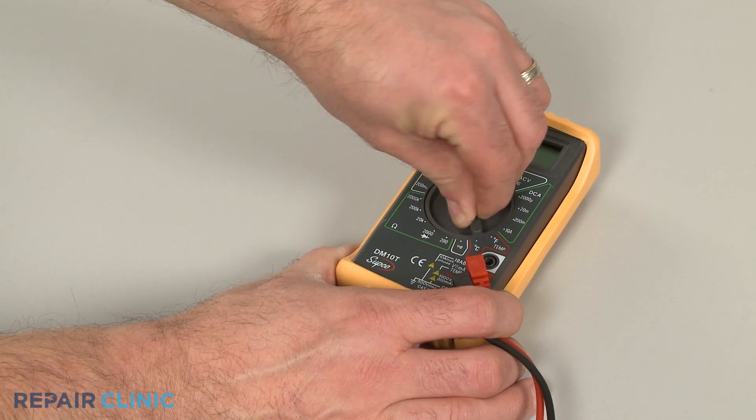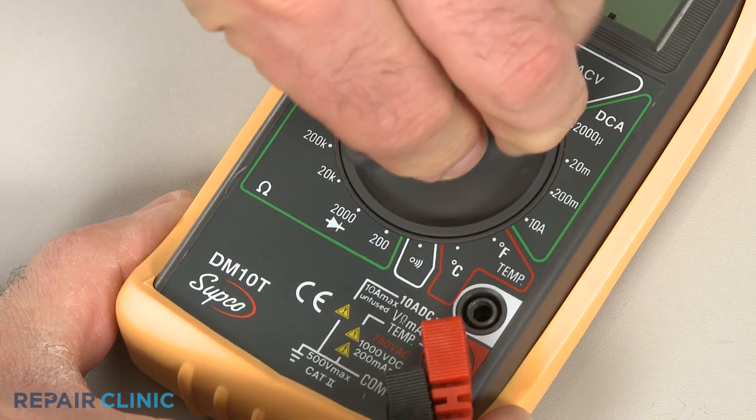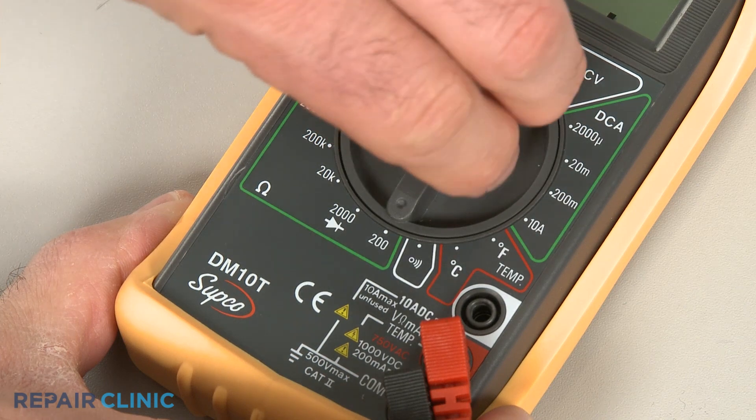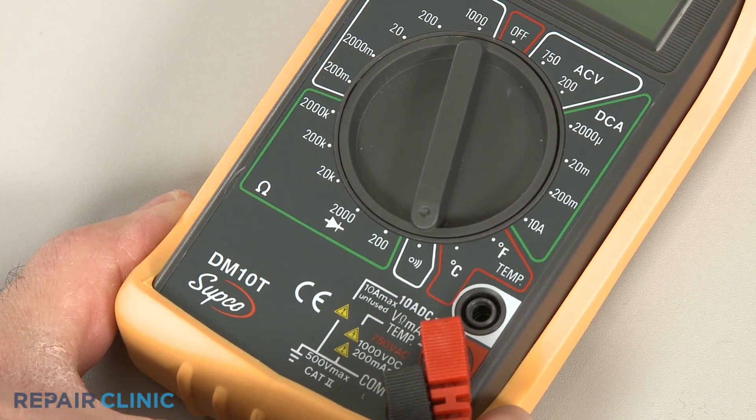When using a digital model, again rotate the dial to the lowest setting for ohms of resistance, or resistance with tone, if your meter has this option.